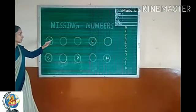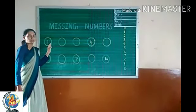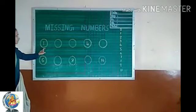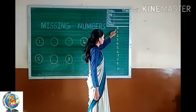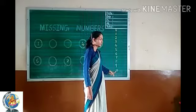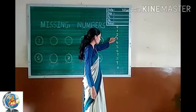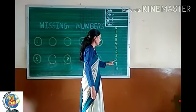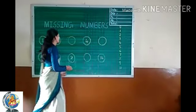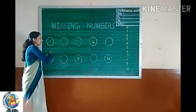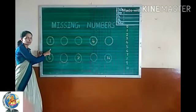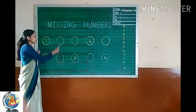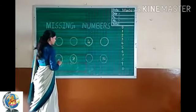Let's count: 1, 2, 3, 4 and 5. Our topic is missing numbers — how to write missing numbers. Look at here kids. I write 0, 2, 3, 4, 5, 6, 7, 8, 9 and 10. Here I write some numbers, but some circles are empty. That means some numbers are missing.